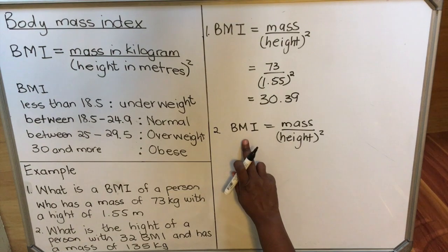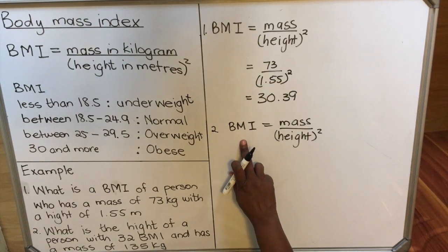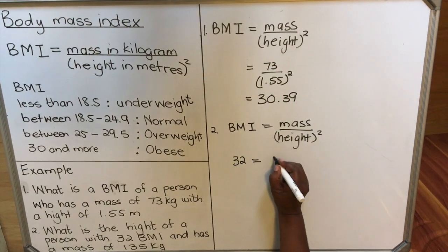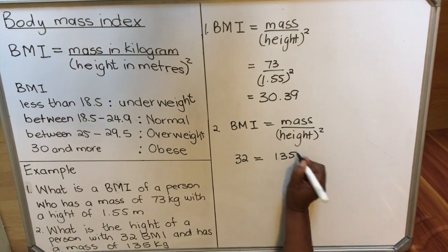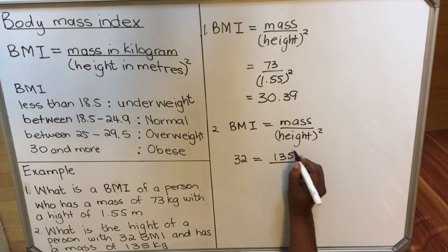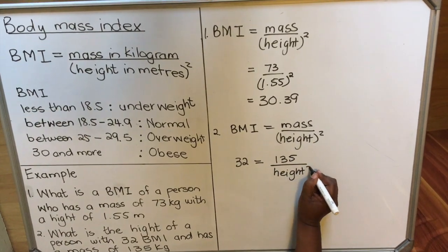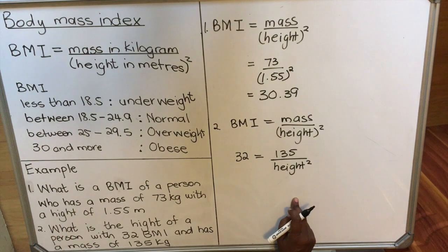You start by writing the formula: Body mass index equals mass over height squared. Then we substitute the values that you are given. The body mass index is 32, and the mass is 135 kilograms divided by—we are asking for the height, but the height comes with a squared.